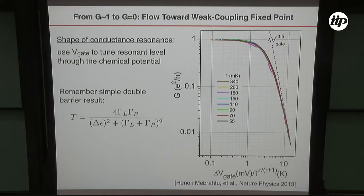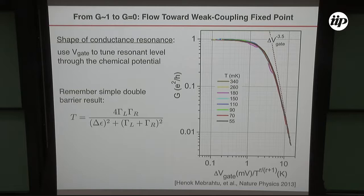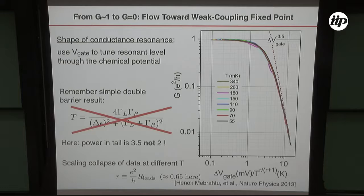Let's look a little more at the shape of one of those peaks. This is the conductance as a function of gate voltage — just half of one of those peaks. The simple quantum mechanical formula said it should be a Lorentzian, so the power down here should be minus 2, but actually it's minus 3.5. The simple double-barrier formula certainly does not work. What's happening is that you start out with a very broad resonance, and as the temperature goes down it gets renormalized smaller and smaller, but the tails of the resonance have acquired this unusual power-law dependence.